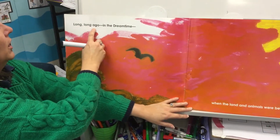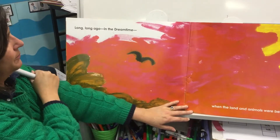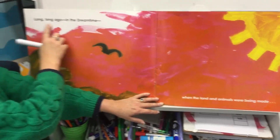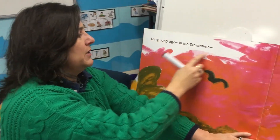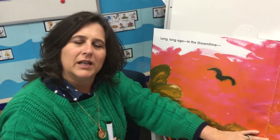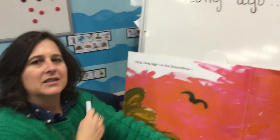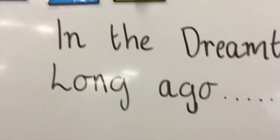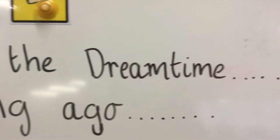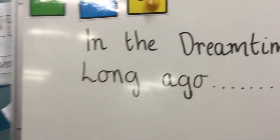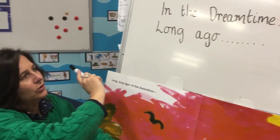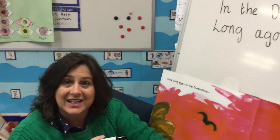Long, long ago in the dream time, when the land and animals were being made. So we might think this might be a good way to start your story. We've got some sentence starters up here — one of them says 'long ago' and the other says 'in the dream time,' and they're two different ways that you could start your story. You might start with just 'long ago,' or 'long ago in the dream time,' or you could start with 'in the dream time.'